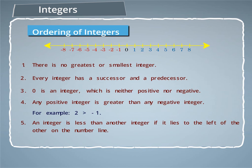5. An integer is less than another integer if it lies to the left of the other on the number line. For example, minus 2 is greater than minus 8, and 7 is greater than 2.